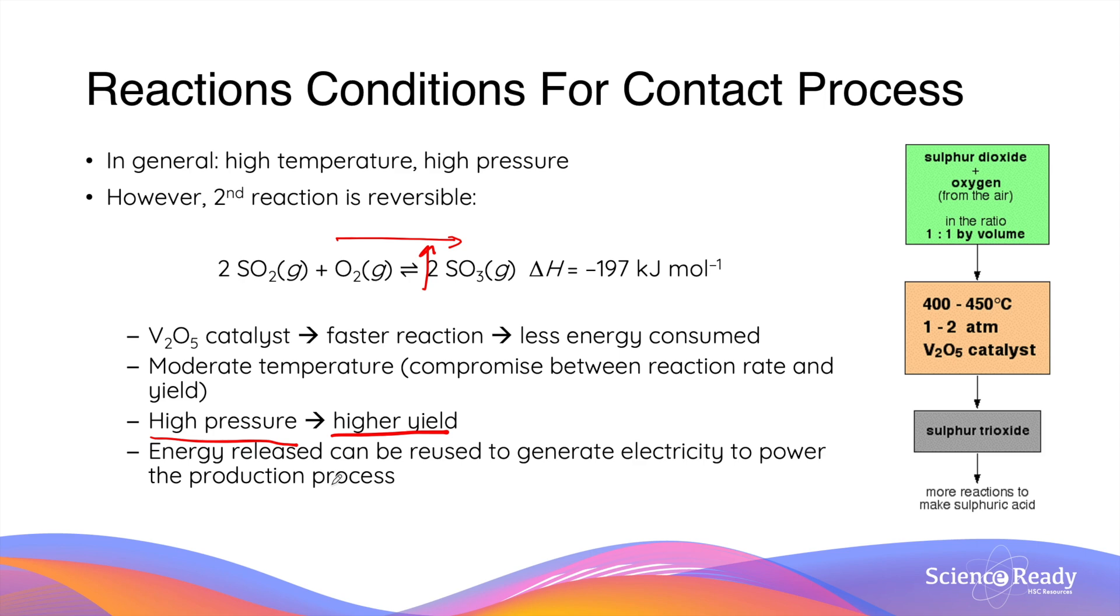To make the reaction even more economical, as it is exothermic, the energy that's produced can be reused to generate electricity, which can then be in turn used to power the production process of producing sulfuric acid.